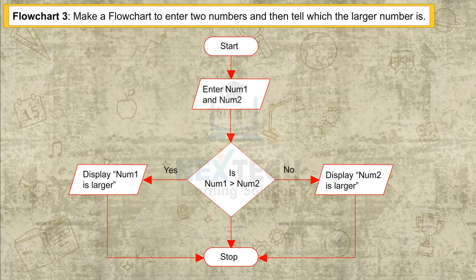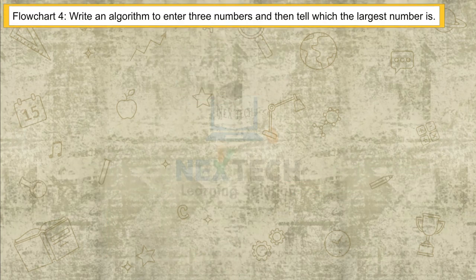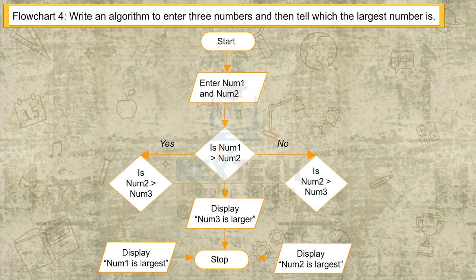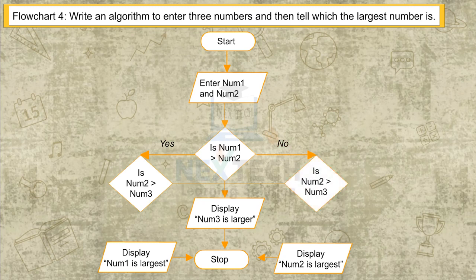Flowchart 3: Make a flowchart to enter two numbers and then tell which the larger number is. Start. Enter num1 and num2. Is num1 greater than num2? Yes: Display num1 is larger. No: Display num2 is larger. Stop. Flowchart 4: Write an algorithm to enter three numbers and then tell which the largest number is. Start. Enter num1, num2, and num3. Is num1 greater than num2? Yes: Is num1 greater than num3? No: Is num2 greater than num3? Display num3 is larger. Display num1 is largest. Display num2 is largest. Stop.